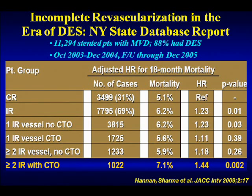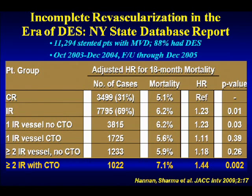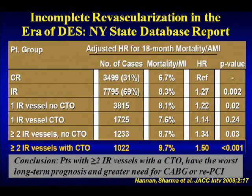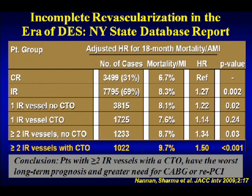In the DES era, a recent paper in JACC Interventions showed a similar message: two-vessel disease without CTO had 18-month mortality of 5.9%, but two incompletely revascularized vessels with a CTO was 7.1%. That's largely driven by myocardial infarction. The presence of CTO gives bad prognosis largely because when the second vessel — which provides collaterals — goes down, the patient presents with a double-vessel MI rather than a single-vessel MI.